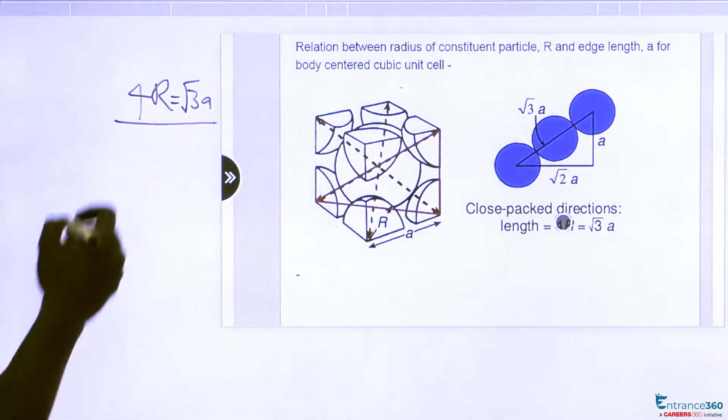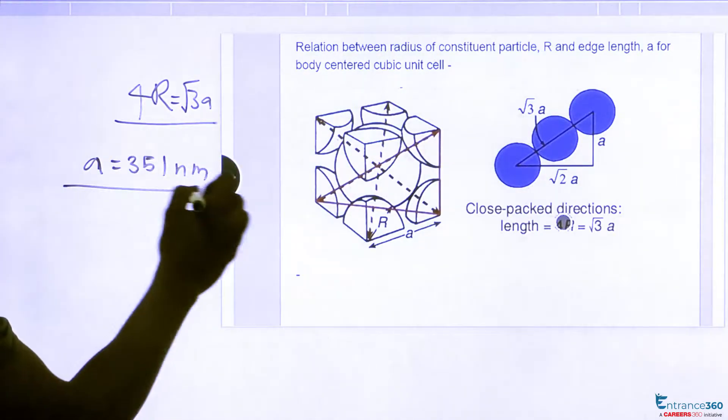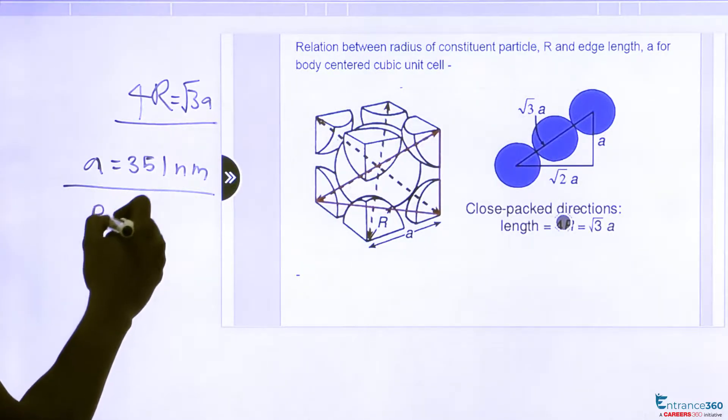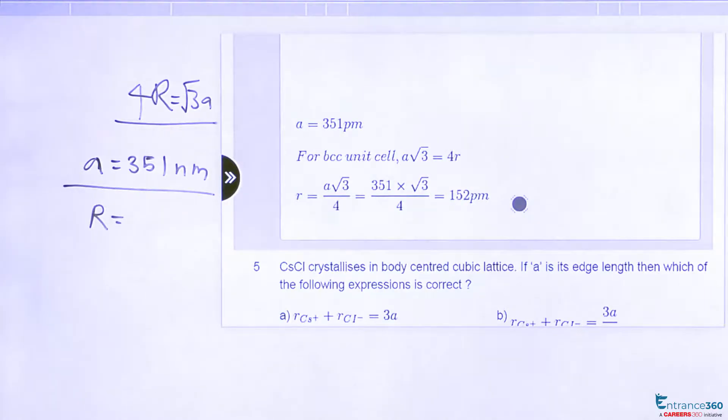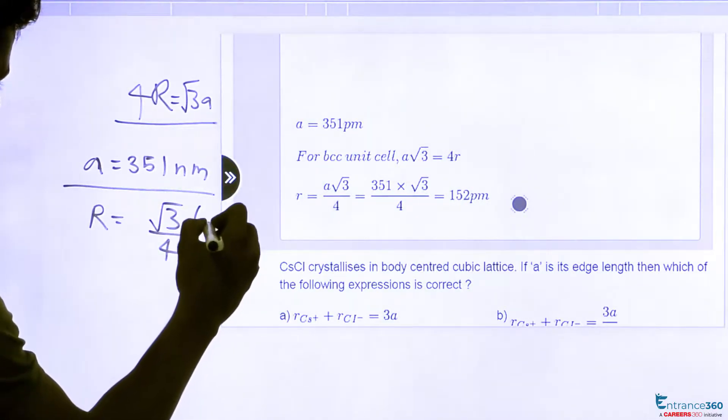So we have given a equals 351 nanometer. Here we can substitute the value of a and we can find the value of the radius r. So r will be root 3 by 4 into a.